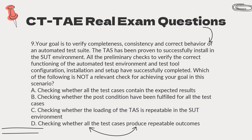Question 9. Your goal is to verify completeness, consistency and correct behavior of an automated test suite. The TUSH has been proven to successfully install in the SUT environment. All the preliminary checks to verify the correct functioning of the automated test environment and test tool configuration, installation and setup have successfully completed. Which of the following is not a relevant check for achieving your goal in this scenario? A. Checking whether all the test cases contain the expected results. B. Checking whether the post conditions have been fulfilled for all the test cases. C. Checking whether the loading of the TUSH is repeatable in the SUT environment. D. Checking whether all the test cases produce repeatable outcomes.